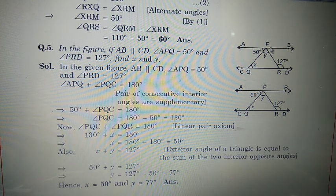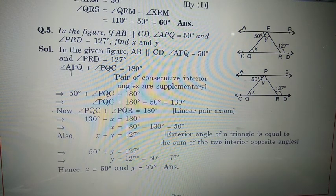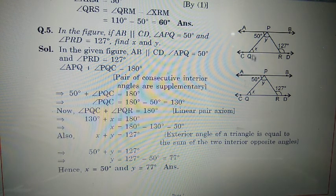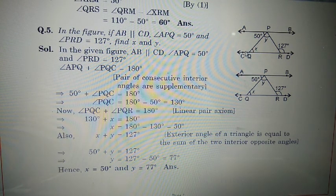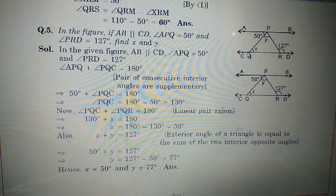Angle APQ is 50 degrees. Angle APQ and angle PQC are co-interior angles on the same side, so their sum is 180 degrees. Since AB is parallel to CD and this angle is 50, angle PQC equals 130 degrees because co-interior angles sum to 180 degrees.